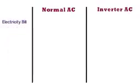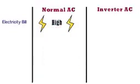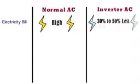Electricity bill: The energy consumption in case of normal AC is high, hence the electricity bill is high. On the contrary, the inverter AC uses less power, hence the electricity bill is 30 to 50% less as compared to normal AC.